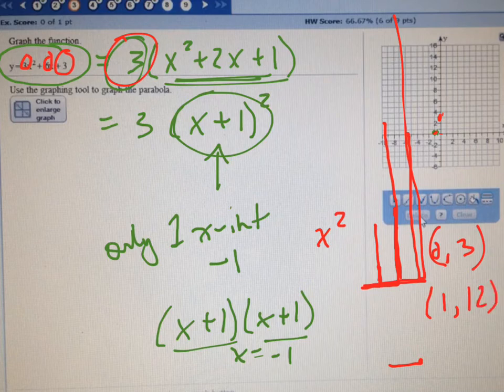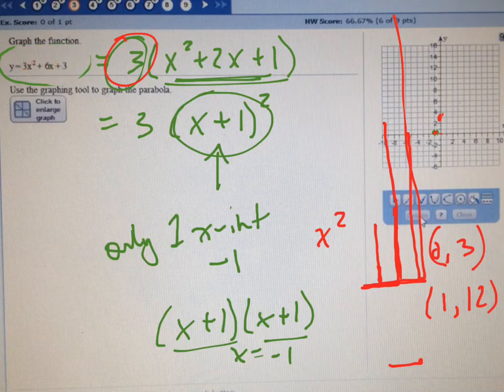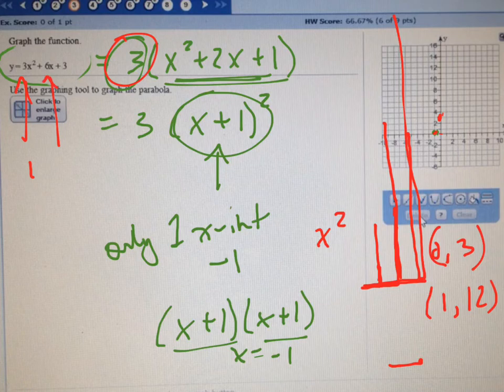And again, if you want to test it, plug it in over here and see if that works. Plug in 1 for x, and you're going to get 3 plus 6 plus 3, which is 12. And so sure enough, that's another point up there.